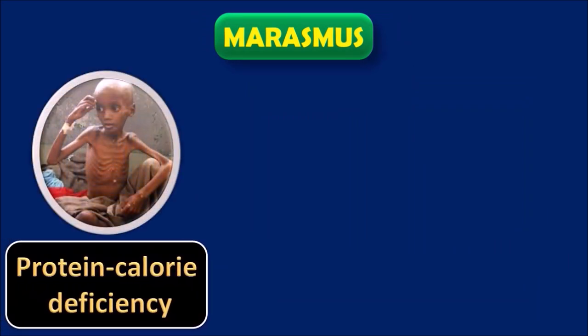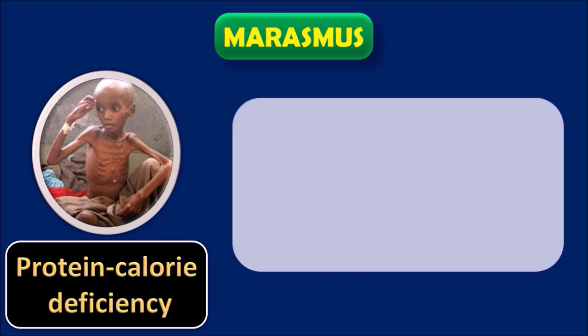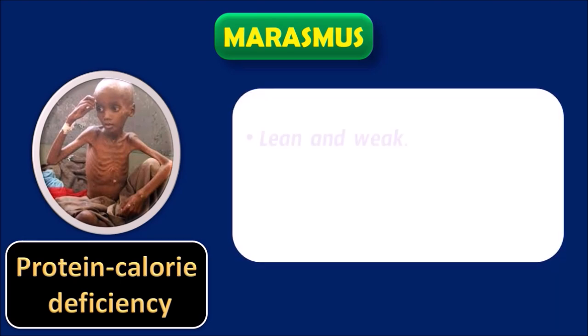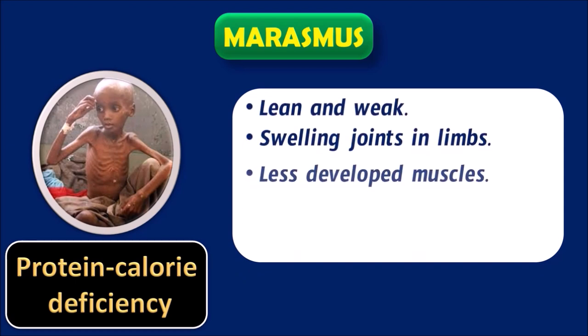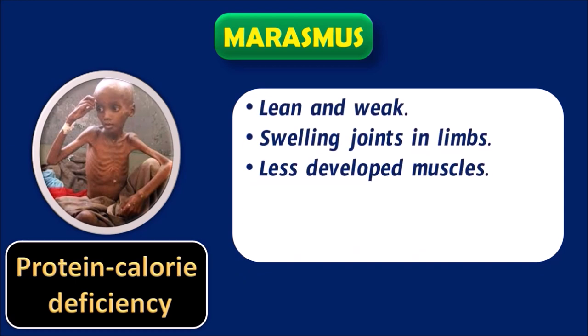Marasmus is a disease caused due to protein-calorie deficiency. It generally occurs in neglected children when the mother gets an immediate pregnancy or repeated childbirth. The symptoms are: lean and weak body, swelling joints in the limbs, less developed muscles, diarrhea, and dry skin.